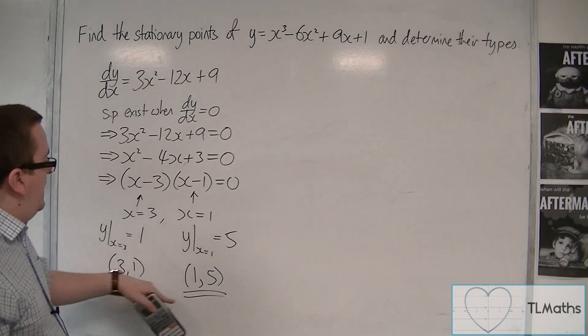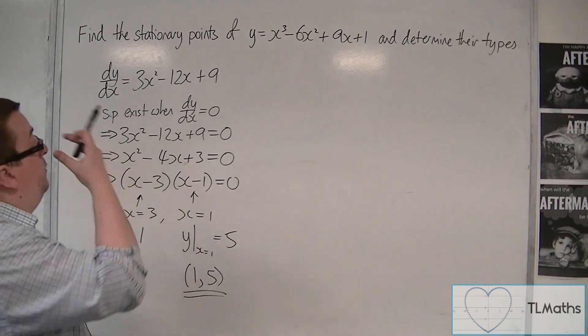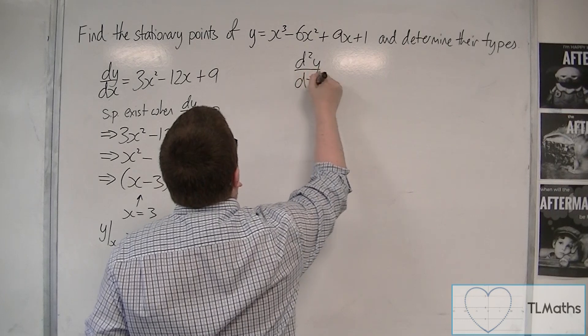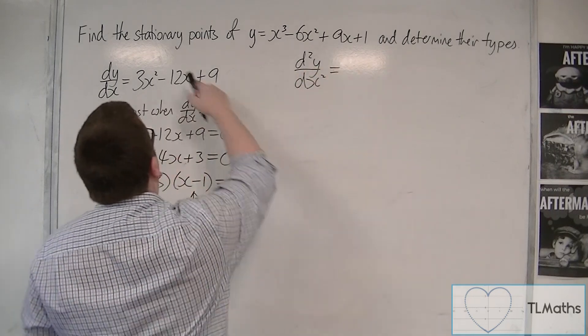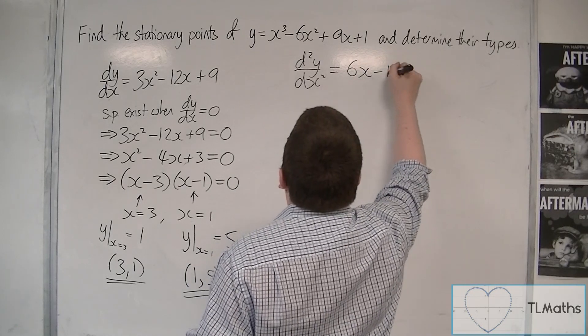Now, I need to determine whether they are maximums or minimums. In order to do that, I find the second derivative, d²y/dx². So differentiate this, and we get 6x - 12.